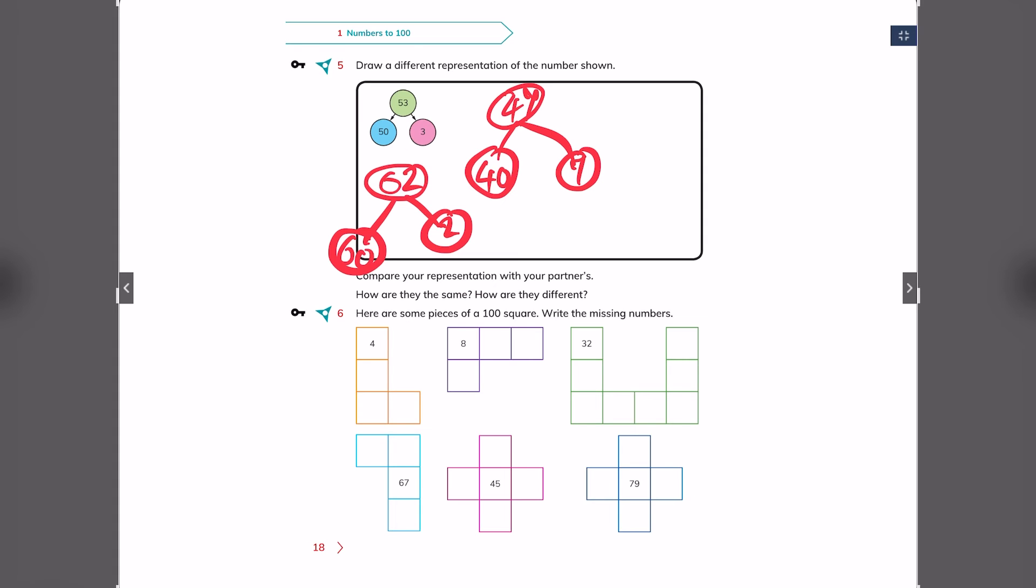Here are some pieces of 100 square. Write the missing numbers. A piece of advice: while doing this kind of puzzles, when you go down, you always add 10. When you go up, you always minus it by 10. When you go right, you plus it by 1. When you go left, you minus it by 1. Let me do the first one for you.